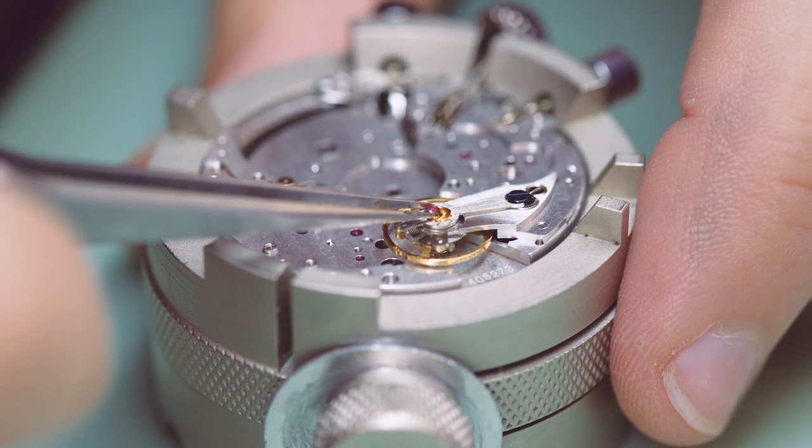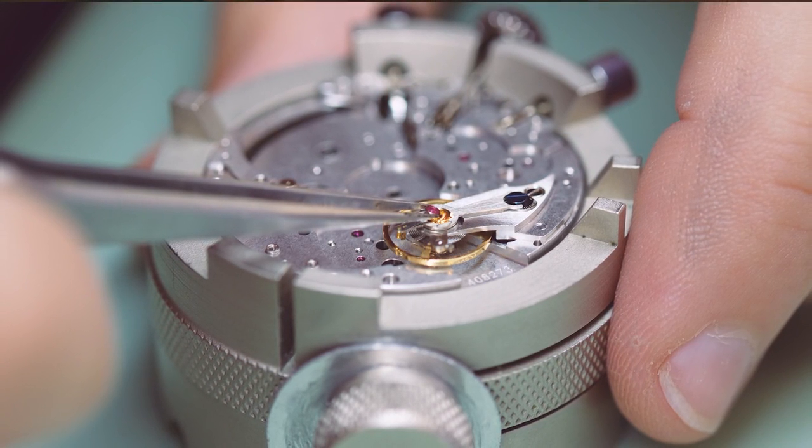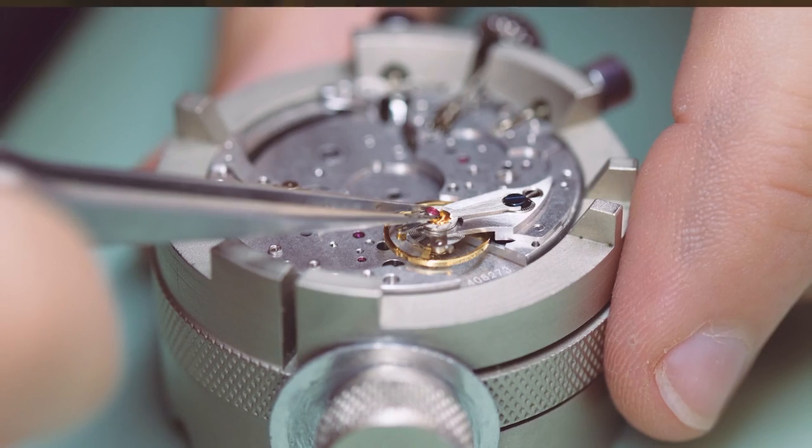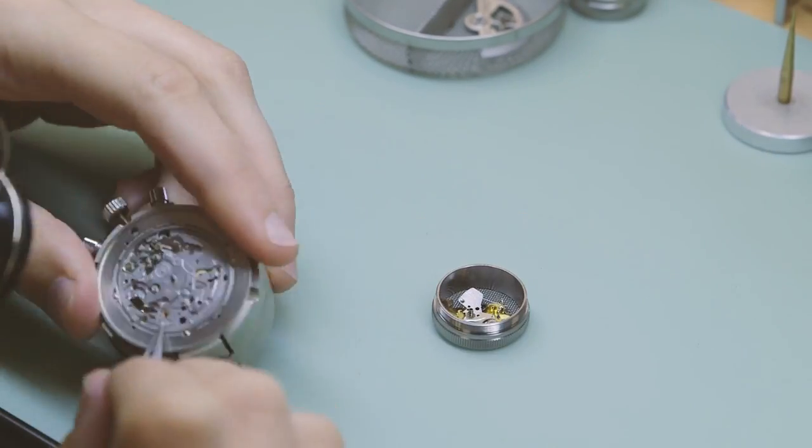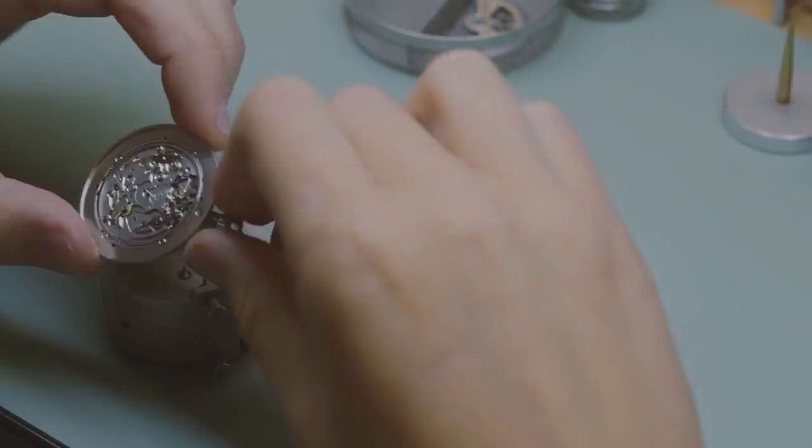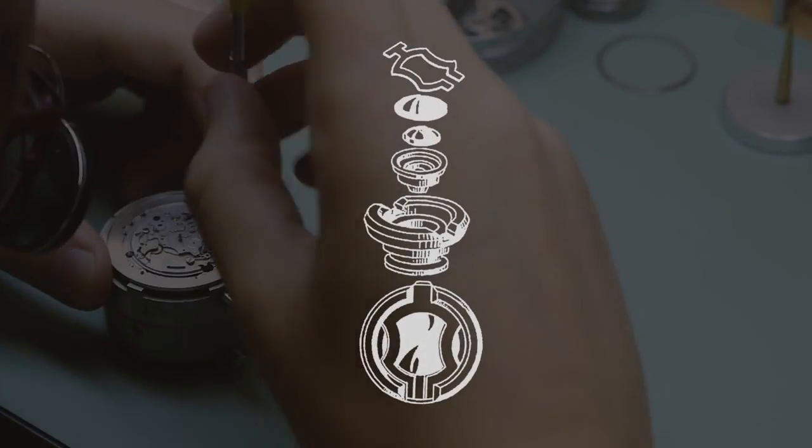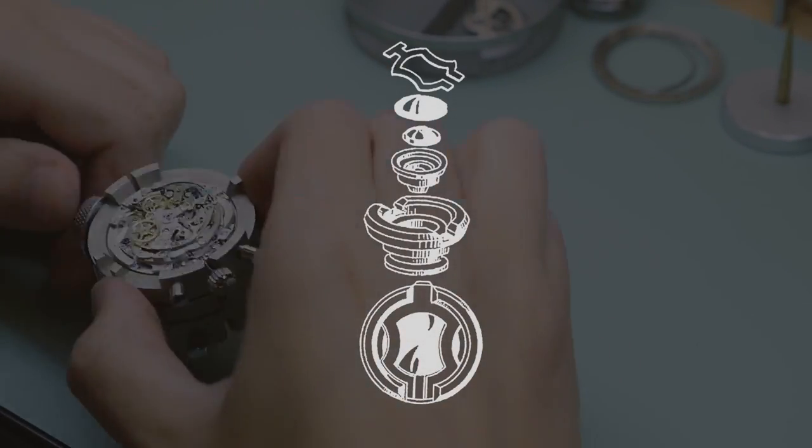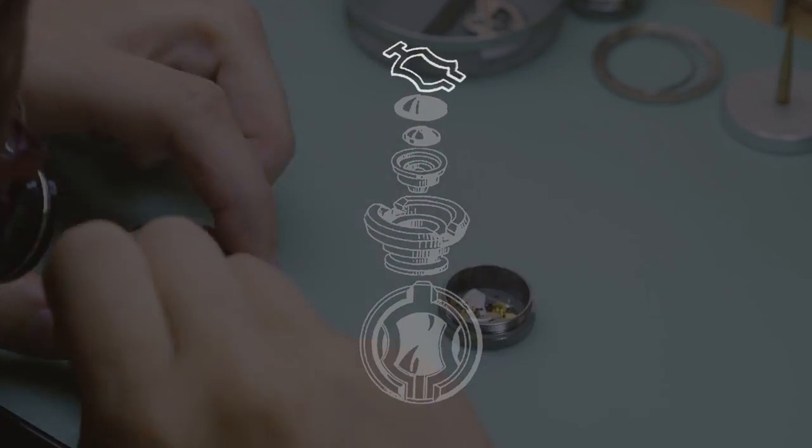This was the first commercial and widely used shock prevention system owned by the Swatch group. The inca block shock protection system is the trade name for a spring-loaded mounting system for the jewel bearing that supports the balance wheel to protect the wheel's delicate pivots from damage during shock.